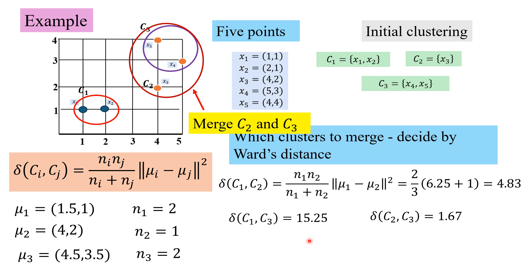We have seen many distance measures between clusters used to choose which clusters to merge at every stage. In this video, we went through the WARDS distance, which is based on minimum variance. We find the distance using the formula of weighted centroid distance — this is the centroid distance and this is the weight. For each pair of clusters, we compute this and find the smallest, which gives us the pair to merge. I hope this video was useful. Thanks for watching — we shall meet again for more videos.